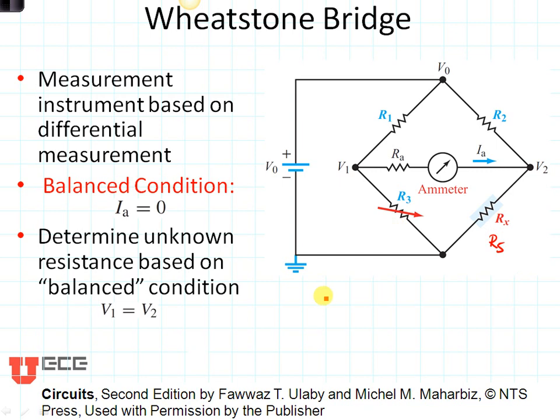The balance condition is when you adjust R3 until the current, as seen in an ammeter, is equal to zero. Then the circuit is said to be balanced. If Ia is equal to zero, then we know that V1 would equal V2. That would be the balanced condition.